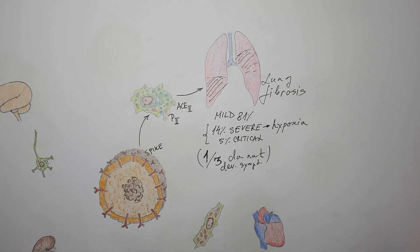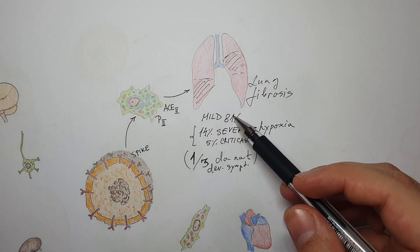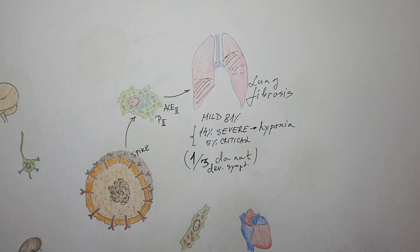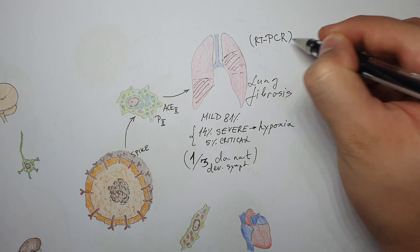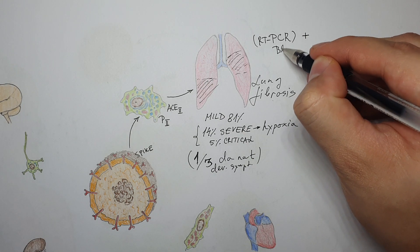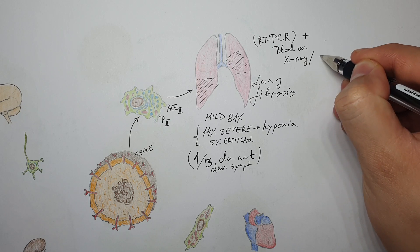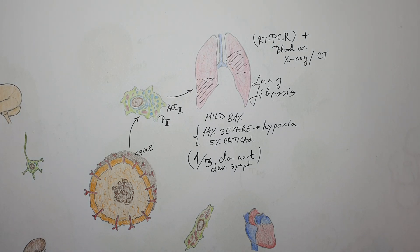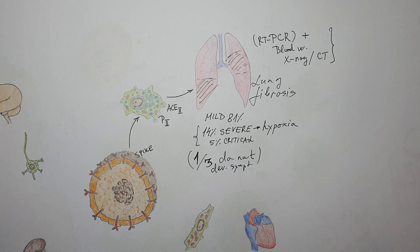Regarding diagnosis: in the region where I work, when patients come in, an anamnesis and clinical evaluation are performed. Then a decision is made on whether they need a real-time PCR test for SARS-CoV-2. If the test is positive, blood work is done along with a chest X-ray or low-dose CT scan of the chest, depending on the hospital's resources. The disease is then evaluated to determine whether the patient needs hospital treatment or can be managed at home.